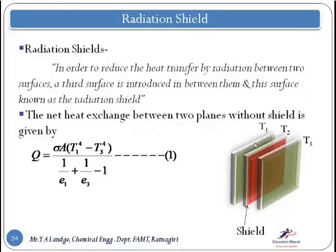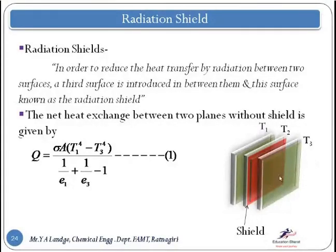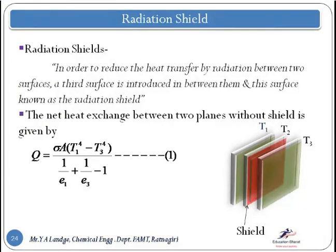Let E1 be the emissivity of the first surface, E2 the emissivity of the radiation shield surface, and E3 the emissivity of the third surface. For two parallel planes, the equation is: Q = σA(T1⁴ − T3⁴) / (1/E1 + 1/E3 − 1). Here σ is the Stefan-Boltzmann constant and A is the surface area. This is the equation for heat exchange between two surfaces without a shield.